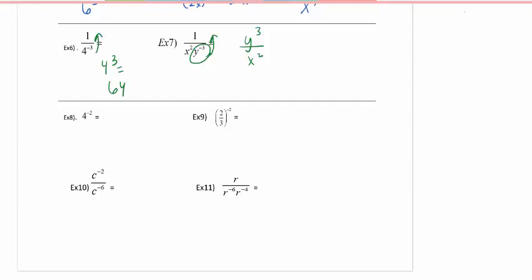At any time that you need to pause this video, you may pause this video. So going to number 8 and 9, again, change the location with the negative exponent. So I'm going to move that 4 down to the denominator. So 1 over 4 squared is equal to 1 over 16.